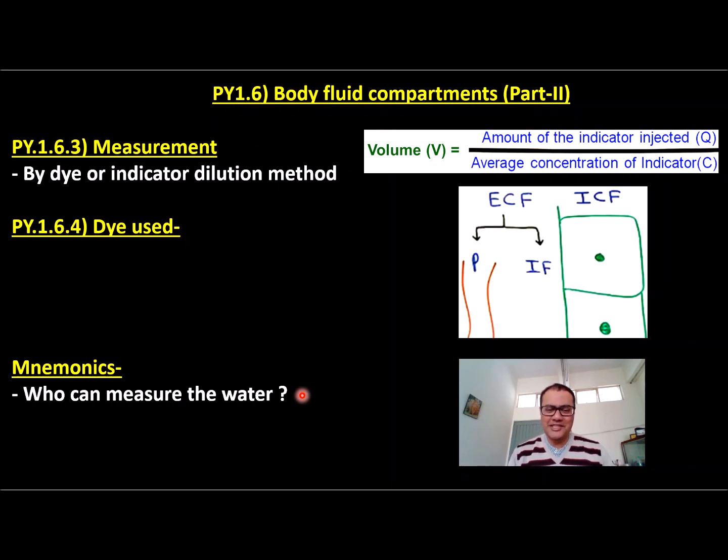Same way, who can measure the water? Same logic, filmy logic. Only water, water itself. So radioactive water, heavy water, that is deuterium oxide and tritium oxide, can be used to measure total body water because these dyes cross blood vessel and cell membrane also and are equally dispersed in the whole body fluid.